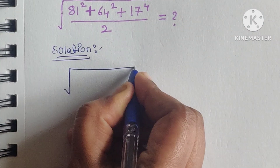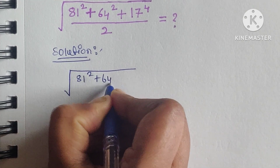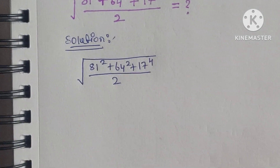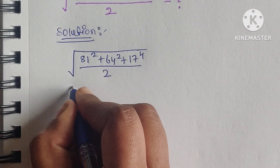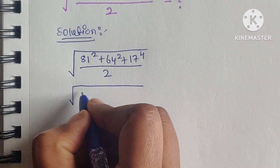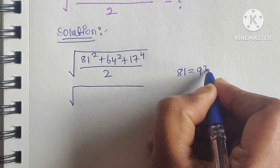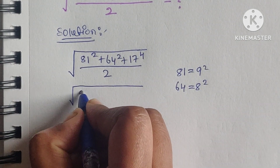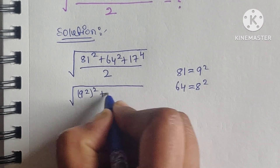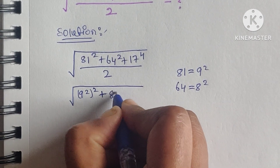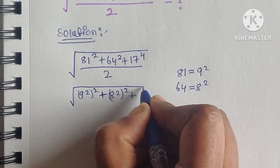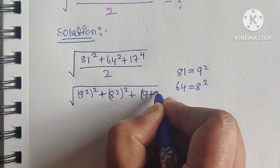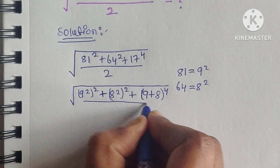We start with the square root of 81 squared plus 64 squared plus 17 to the power of 4 divided by 2. Now, 81 can be written as 9 squared, and 64 can be written as 8 squared. So we have 9 squared to the power of 2, plus 8 squared to the power of 2, plus 17 to the power of 4 divided by 2.